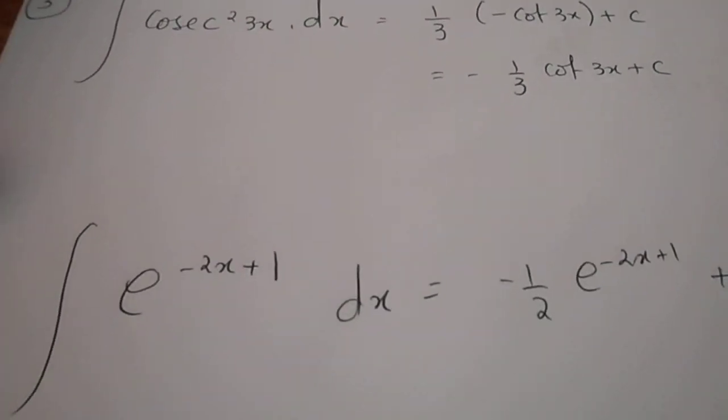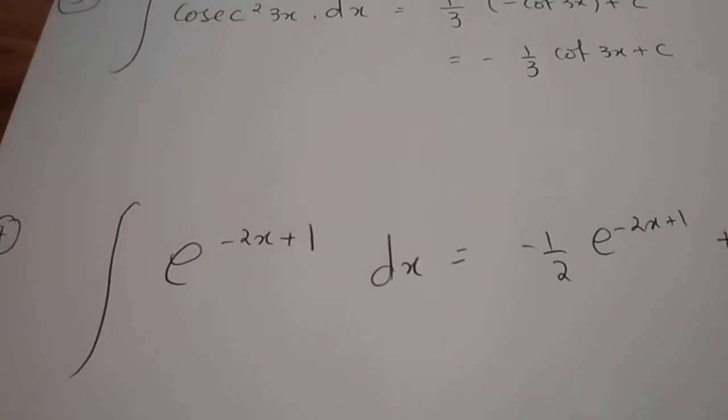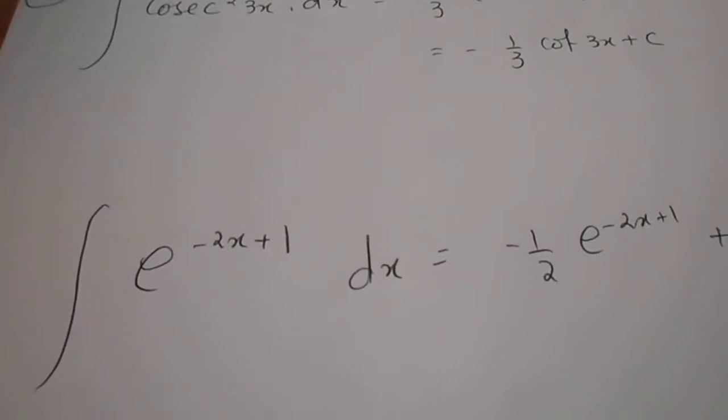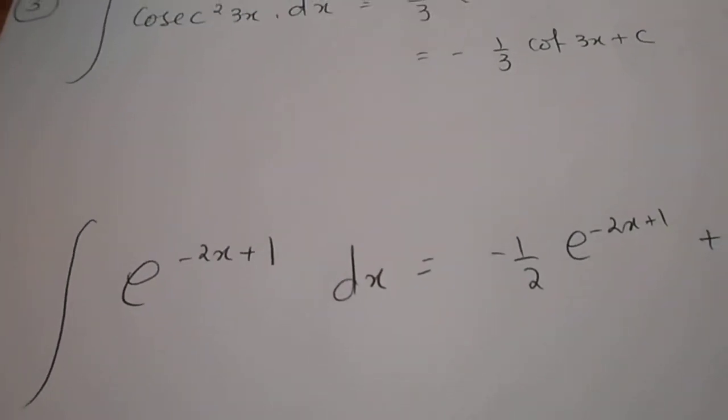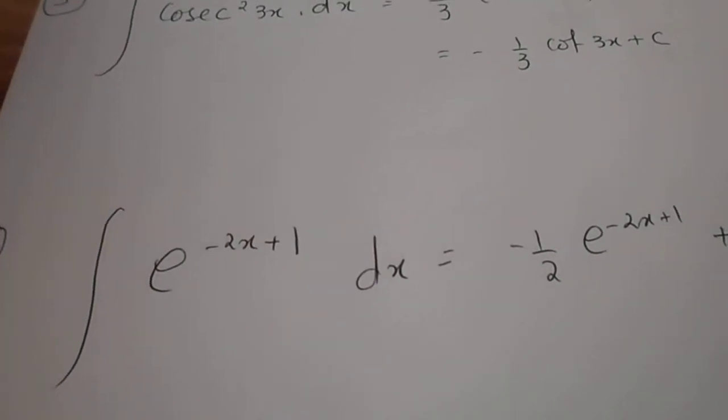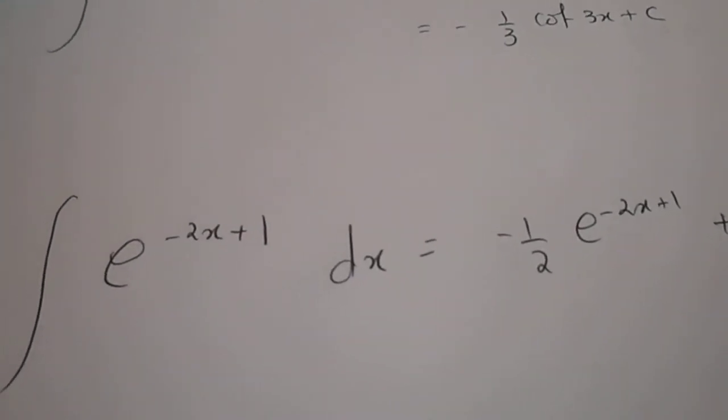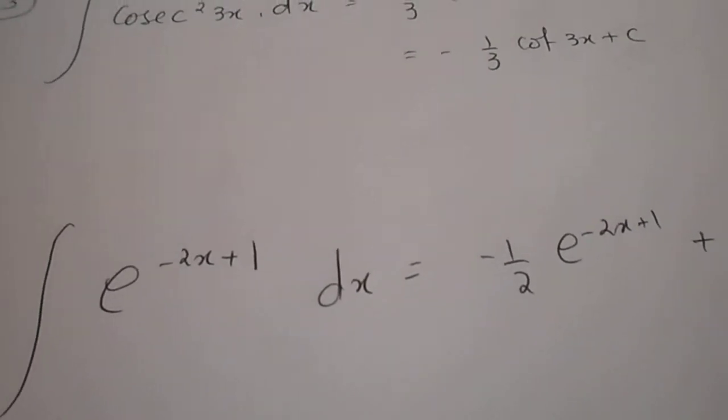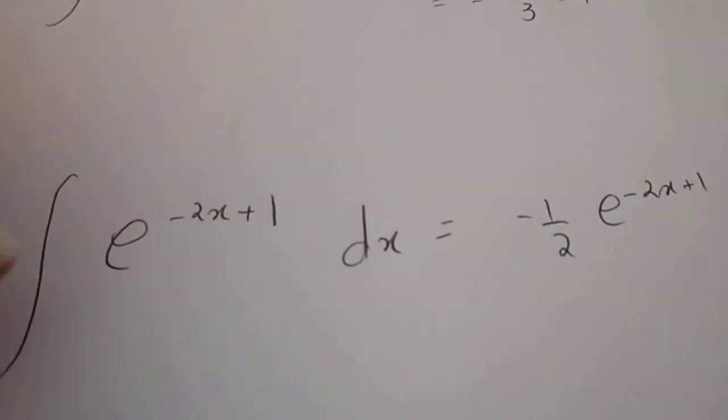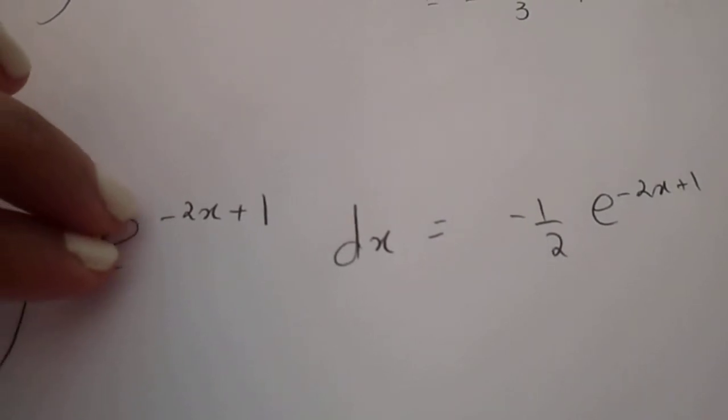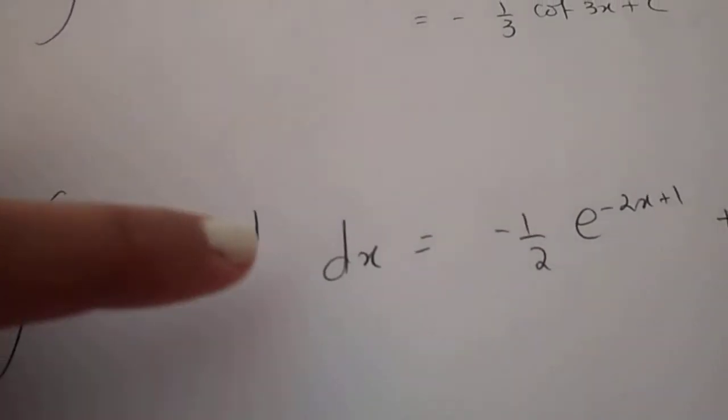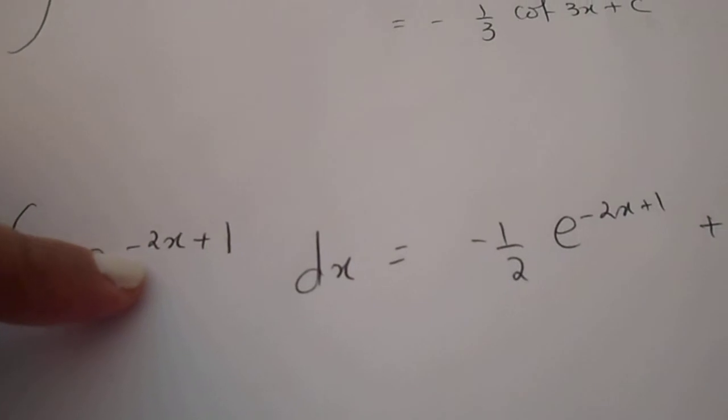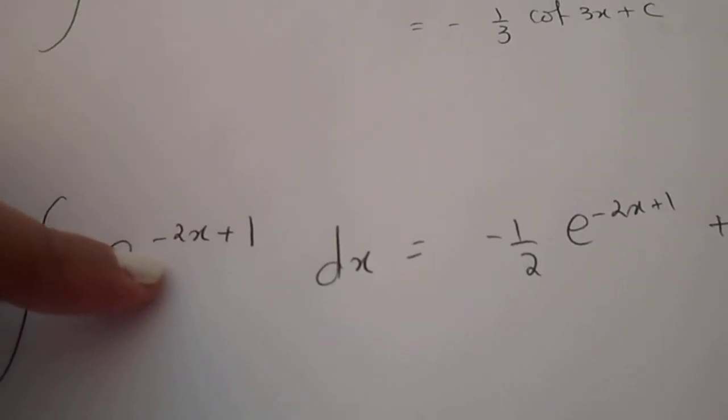Now we move on to the last question, which is an exponential function. The integral of e minus 2x plus 1 dx. Exponential functions, the integration and differentiation of exponential functions are by far the easiest. What you need to do is hide the exponential function, differentiate the power. The derivative of minus 2x plus 1 is minus 2.